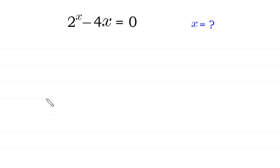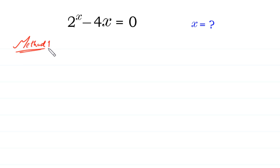Hello, welcome to how to solve this exponential equation: 2 to the power x minus 4x is equal to 0. We will solve it by two methods. Let's start with Method 1. We move this negative 4x to the right side, so 2 to the power x is equal to 4x.